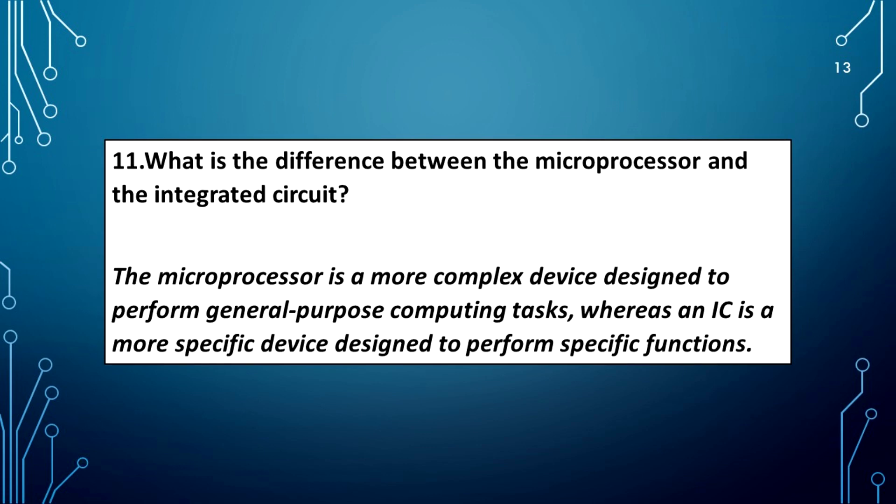What is the difference between the microprocessor and the integrated circuit? The microprocessor is a more complex device designed to perform general purpose computing tasks, whereas an IC is a more specific device designed to perform specific functions.